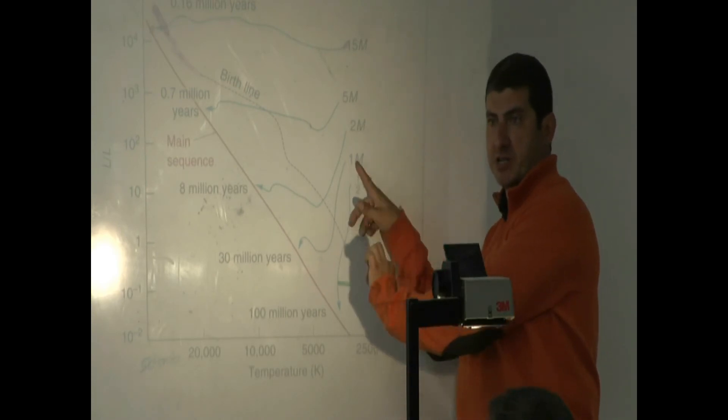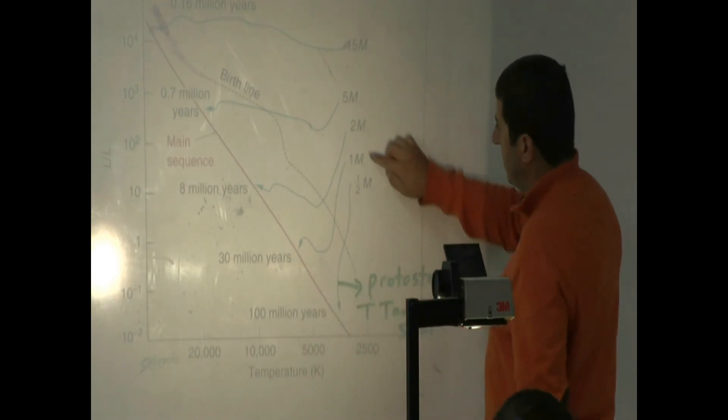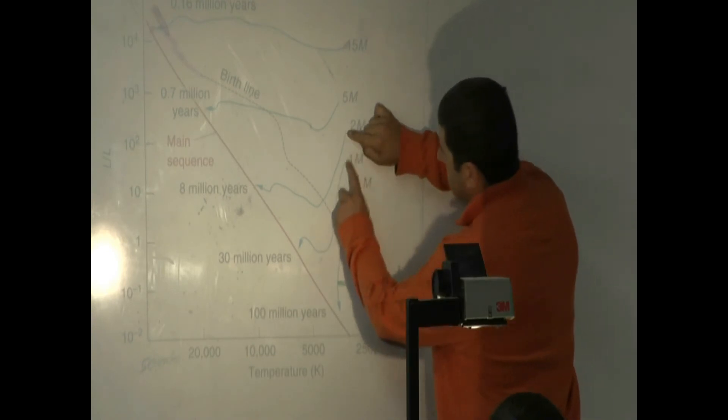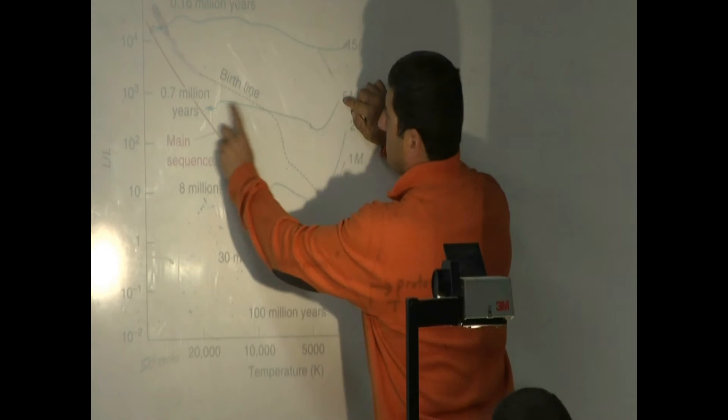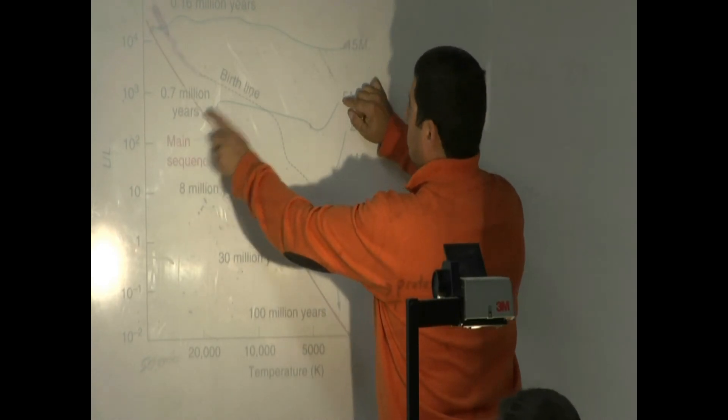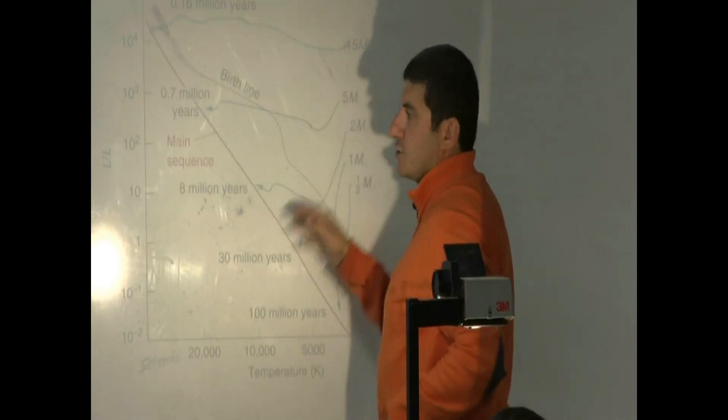From its birth, from the beginning, to the culmination, to becoming a main sequence star. Took 30 million years. Twice the mass of the sun? 8 million years. Five times the mass of the sun? 0.7 million years. 15 times the mass of the sun, 0.16 million years, which is 160,000 years.